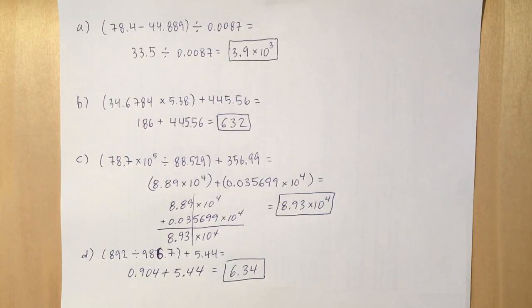B, same sort of strategy. You solve what's in the parentheses first to the multiplication sig fig rules. Since 5.38 has 3 sig figs, that's what the answer is going to have. So 186, and we add that to 445.56, and we have to use addition sig fig rules in that sort of problem.